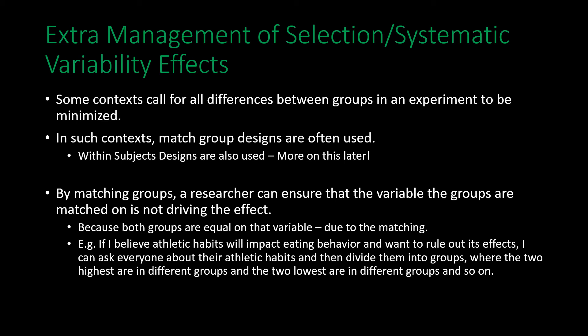Another way of dealing with this is within-subjects designs, which we'll discuss later. By matching groups, a researcher ensures the matched variable is not driving the effect, since both groups are now matched on it and should produce very similar results on that variable. For example, if athletic habits could impact eating behavior, I can ask everyone about their habits and divide them into two groups where the two highest are in different groups and the two lowest are also in different groups, resulting in groups with roughly identical average athletic habits.